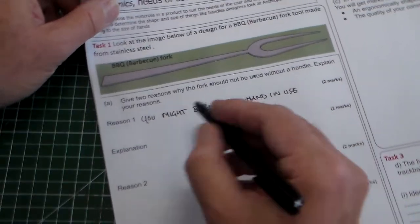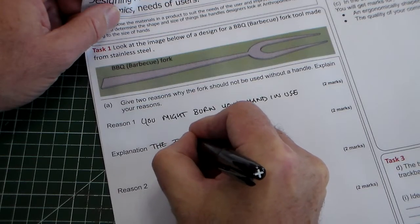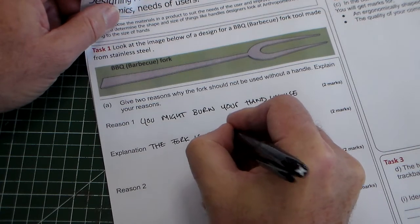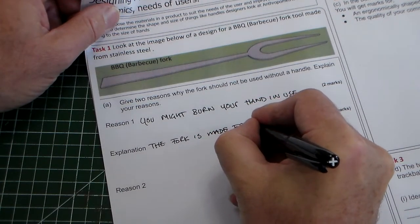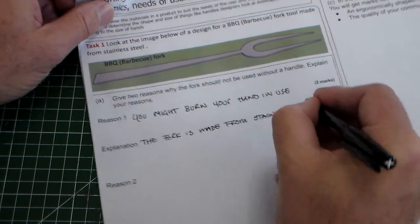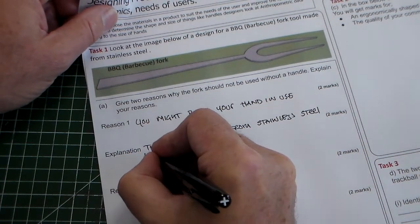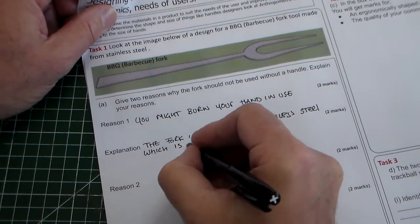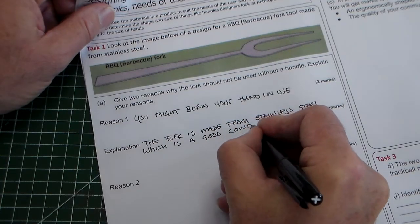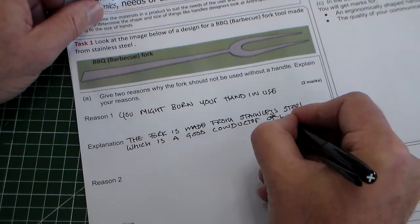So the explanation is: the fork is manufactured from stainless steel which is a good conductor of heat.